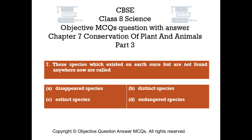Question number 7. Those species which existed on Earth once but are not found anywhere now are called: Option A - Disappeared Species. Option B - Distinct Species. Option C - Extinct Species. Option D - Endangered Species.